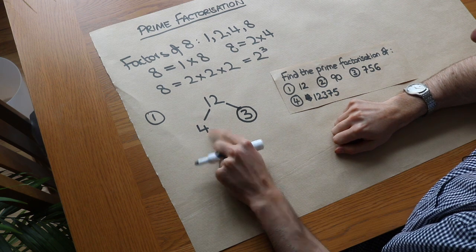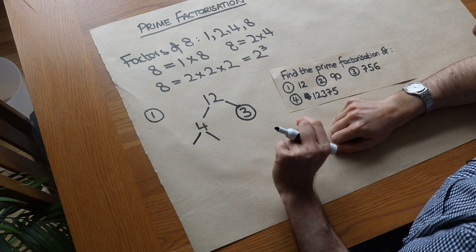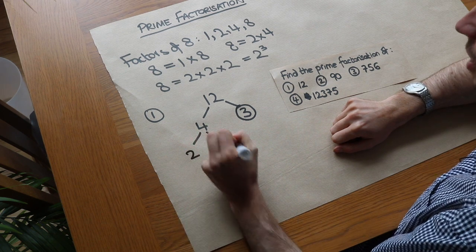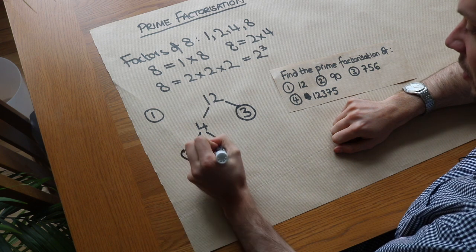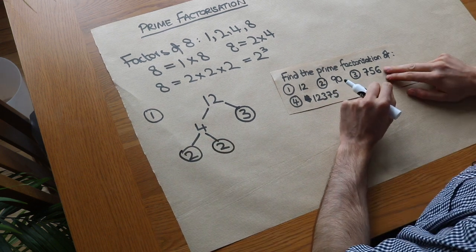Now 4 is not prime so we can split it up further into a product of numbers. And you're not allowed to use 1 by the way. Now 4 is what times what? Well we could do it as 2 times 2. Now 2 is prime so we can circle those. And now we've got a complete prime factorisation tree.